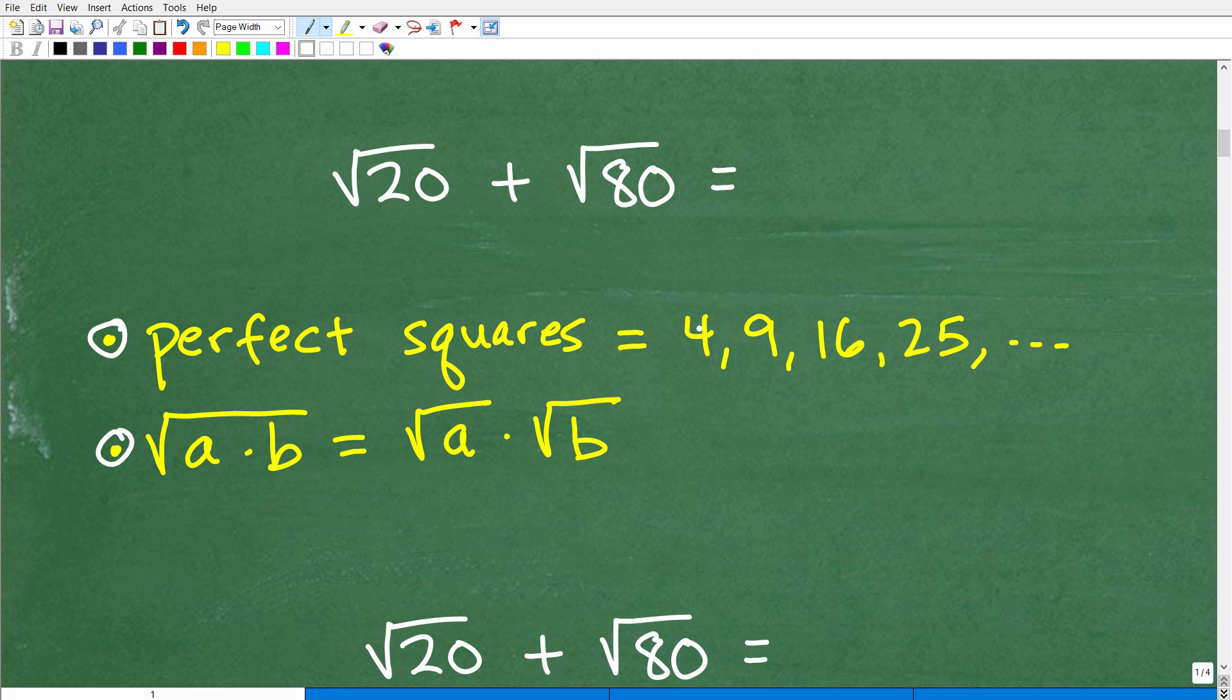The next thing you need to know about square roots and or radicals is this property here. So the square root of A times B is equal to the square root of A times the square root of B. And this is a particular property that basically allows us to split apart one big square root into two smaller square roots, two or more square roots of the individual factors of a particular product.